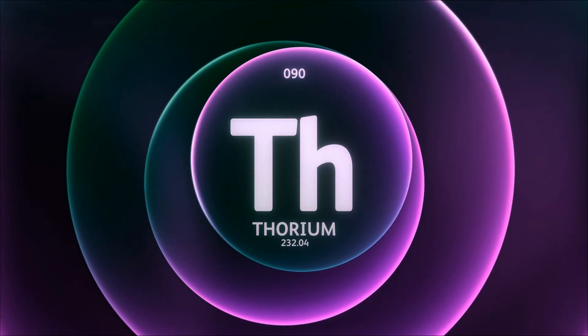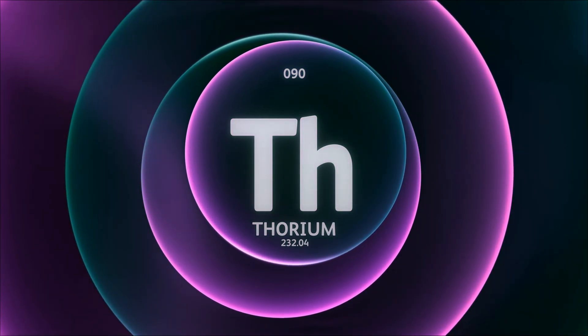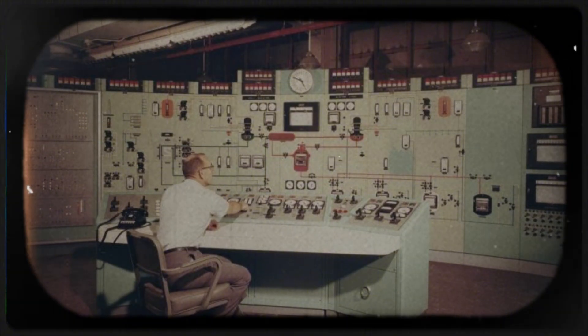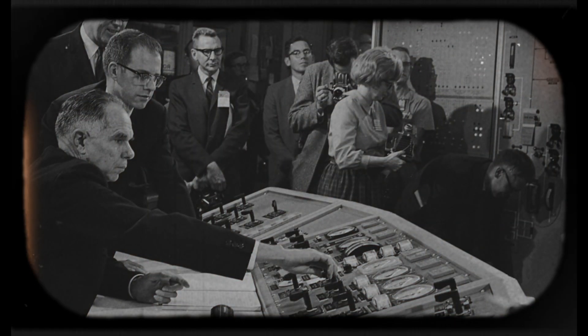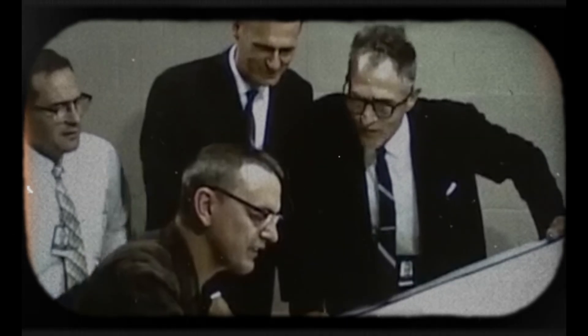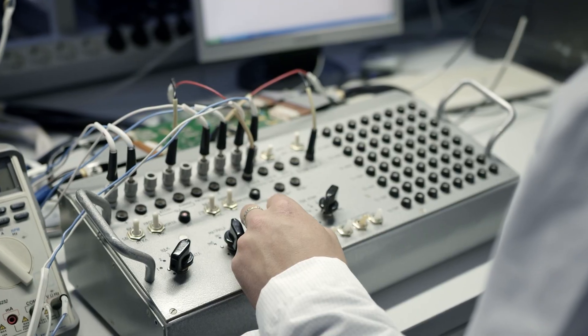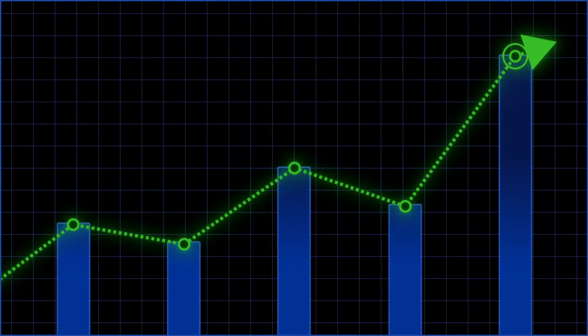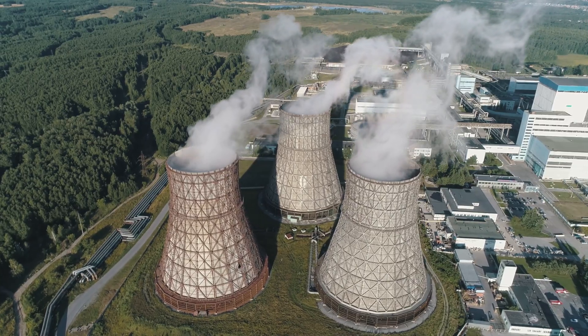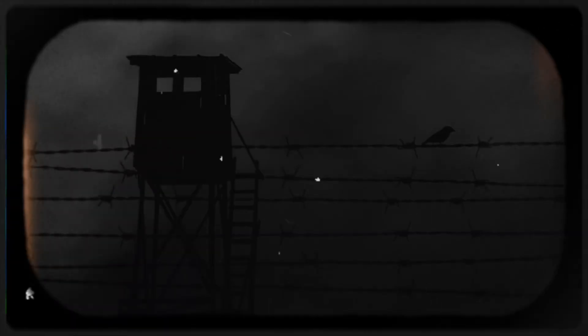To understand why thorium is so special, you first need to know its history. We go back to 1965 at the laboratories in Oak Ridge, Tennessee. There, a group of scientists led by Alvin Weinberg achieved something extraordinary. They operated the world's first thorium molten-salt reactor for four consecutive years. There were no accidents, no safety issues, and it demonstrated an energy efficiency that dwarfed conventional uranium reactors. It was, by all indicators, the future of nuclear power.